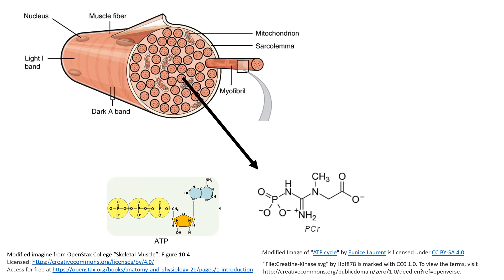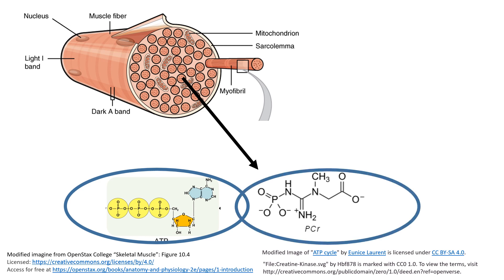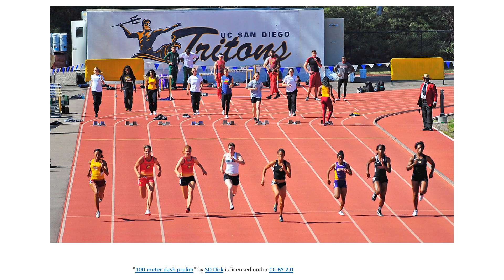The phosphagen system consists of stored ATP and stored phosphocreatine. It is typically utilized when the ATP demand within the muscle fibers is very high and often immediate.